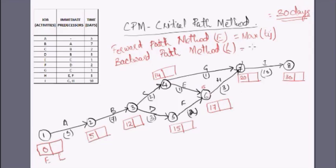Using the backward pass method, we move backwards from node 8 to node 1 to find the latest occurrence of time at each node. Since 30 is the project completion time, the latest occurrence at node 8 is also 30. Going backward, at node 7: 30 minus 10 equals 20. From node 7 to node 6: 20 minus 3 equals 17.